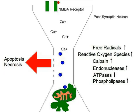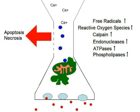The caspase-dependent apoptosis cascade is initiated, leading to apoptosis. If the cell dies through necrosis, however, it releases glutamate and toxic chemicals into the environment around it. The original influx of calcium can also cause the release of more glutamate.